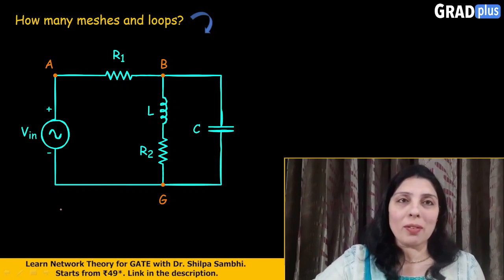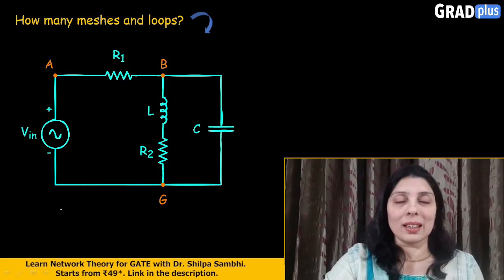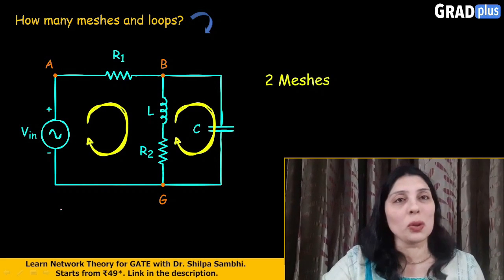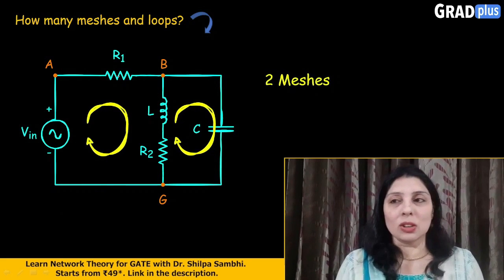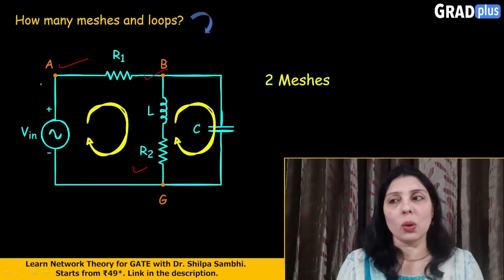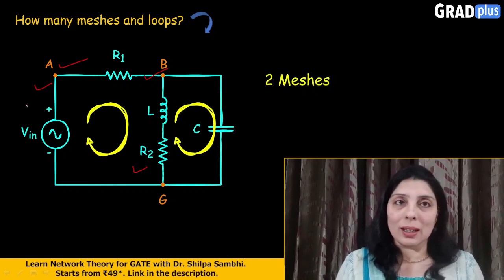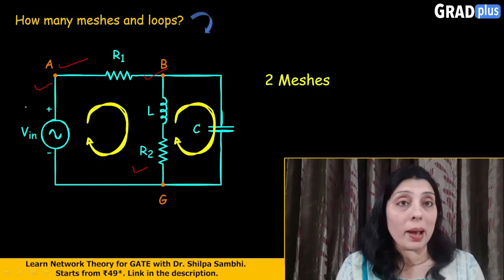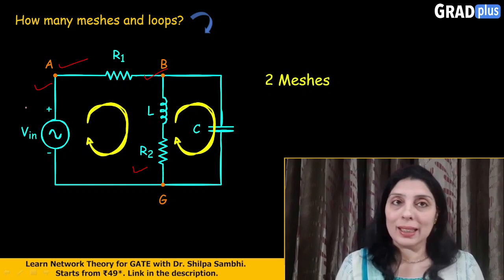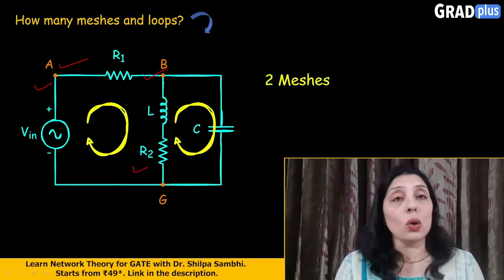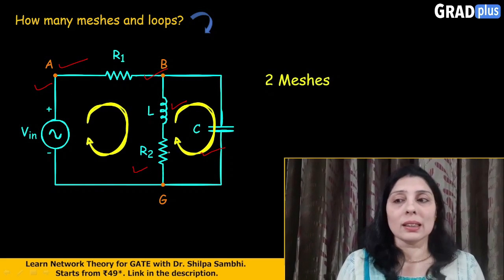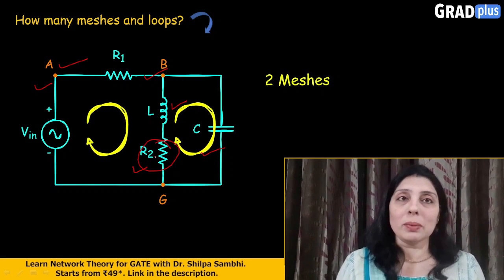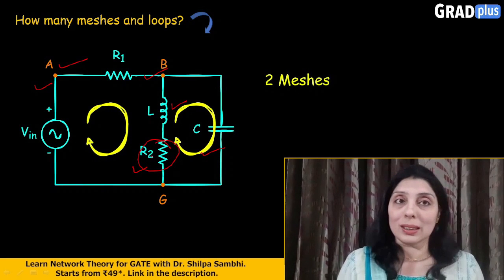So if you have guessed it by now, let me give you the answer. It contains two meshes. Node points A, B, G and back to A — this forms a closed circuit and becomes one mesh because there is no other loop or mesh inside it. Similarly, the loop which consists of the inductor, the capacitor, and the resistor R2 becomes mesh 2. It contains no other mesh inside it.